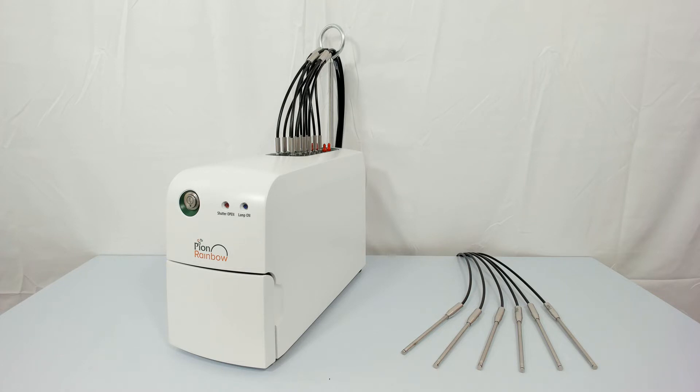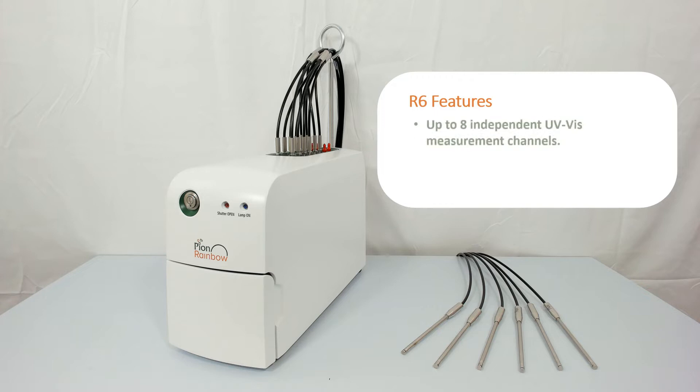The R6 can be fitted with up to a maximum of eight parallel UV-Vis measurement channels, seen here along the top of the instrument. Each features an independent UV-Vis spectrometer and fiber optic dip probe, allowing for the acquisition and real-time processing of concentration data at a freely variable collection interval for up to eight assay vessels in a single run.